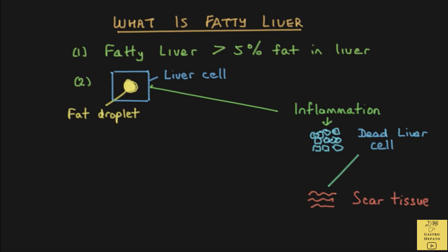Scar tissue replaces these dead liver cells. Scar tissue is similar to the white tissue that forms when we have a cut on our skin. Scar tissue is a normal part of the healing process. Unfortunately, scar tissue in the liver does not contain any functioning liver cells. As more scar tissue forms in the liver, there is less and less healthy liver cells.